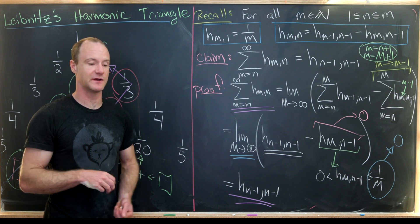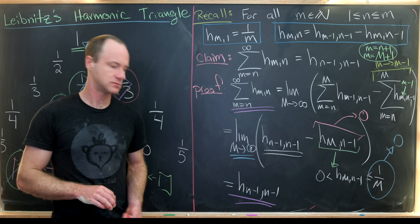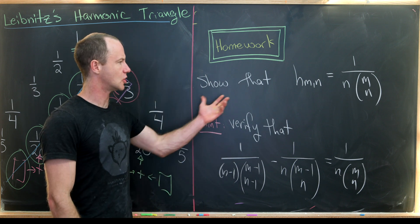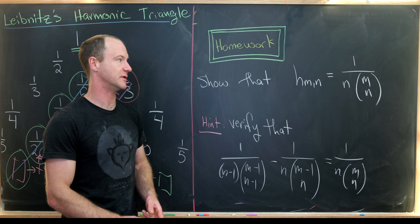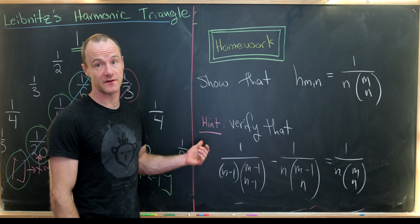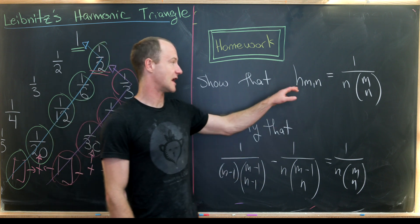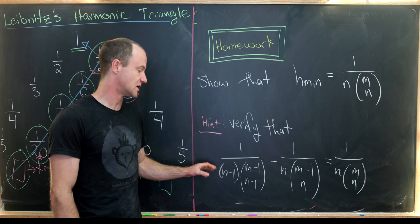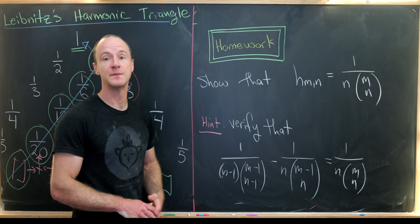As a homework problem, try proving a closed form for the entries of the harmonic triangle. The claim is that h(m, n) = 1 / (n · C(m, n)), where C(m, n) is the binomial coefficient m choose n. A good approach is to verify that this formula satisfies the same recursion that defines our harmonic triangle entries, which you could do by induction or by straightforward calculation.